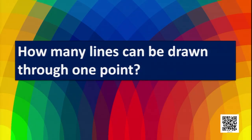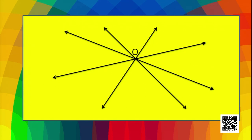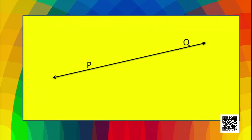Before going to discuss about this, let's have some pre-discussion. How many lines can be drawn through one point? As you know, we can draw many lines through a point. Here the point is O and we have drawn four lines, and we can draw many more. Now, how many lines can be drawn through two points? We can draw only one line through two points P and Q.